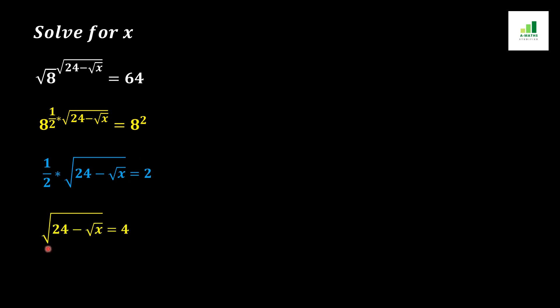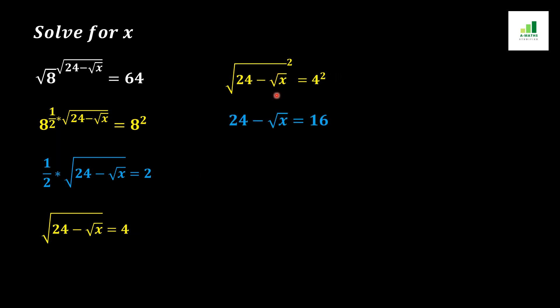As a result we get √(24 − √x) on the left side equal to 4 on the right side. In the next step, we apply squaring on both sides of the equation. The square cancels the square root, so (24 − √x) comes out from the root, and 4 squared converts into 16.